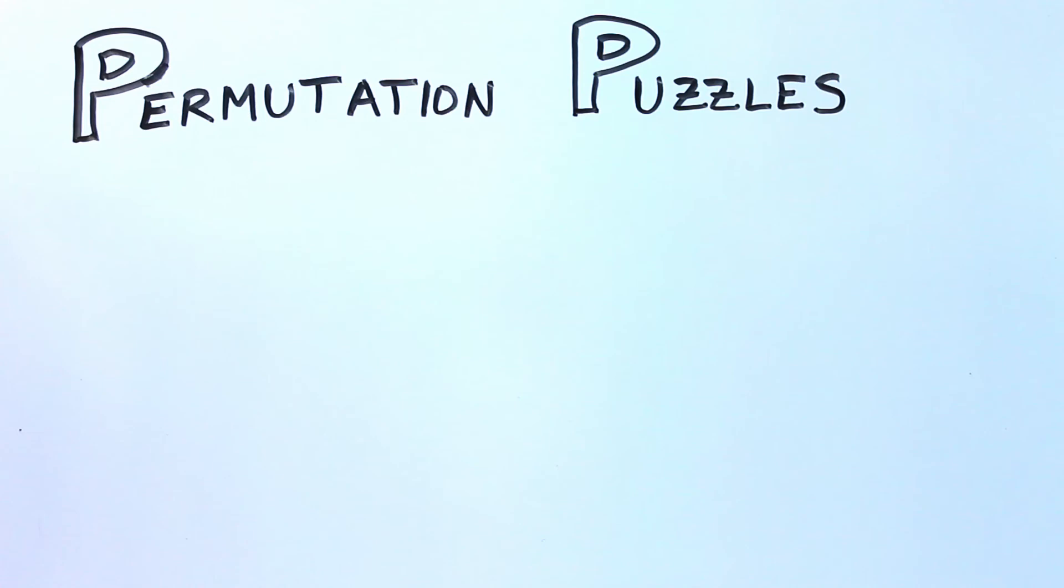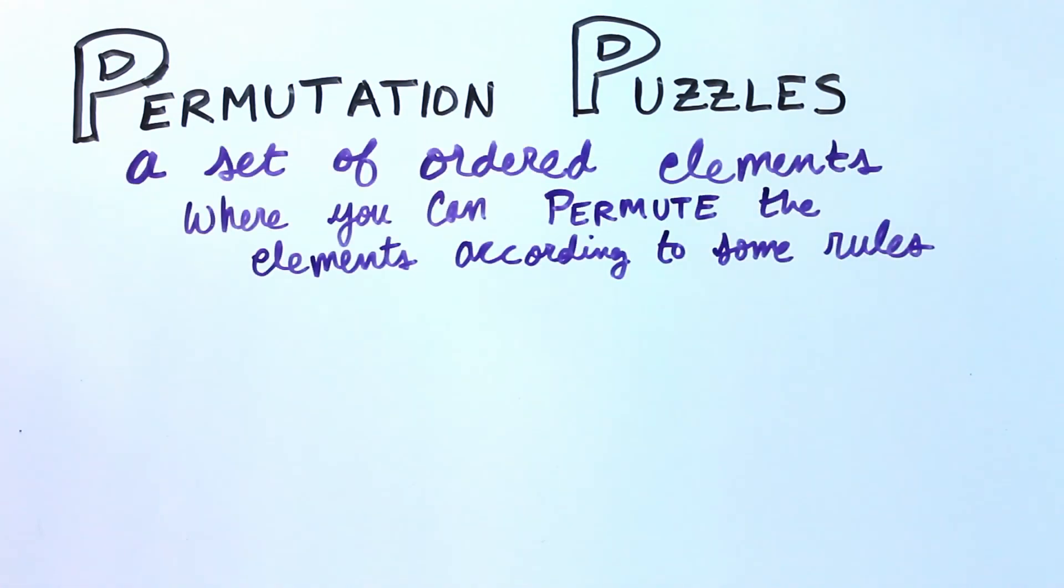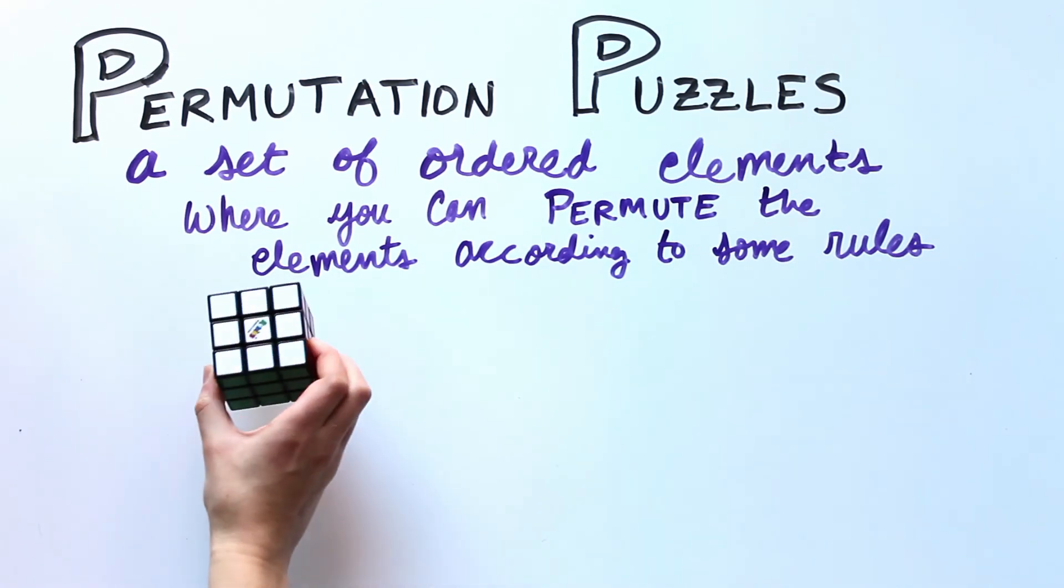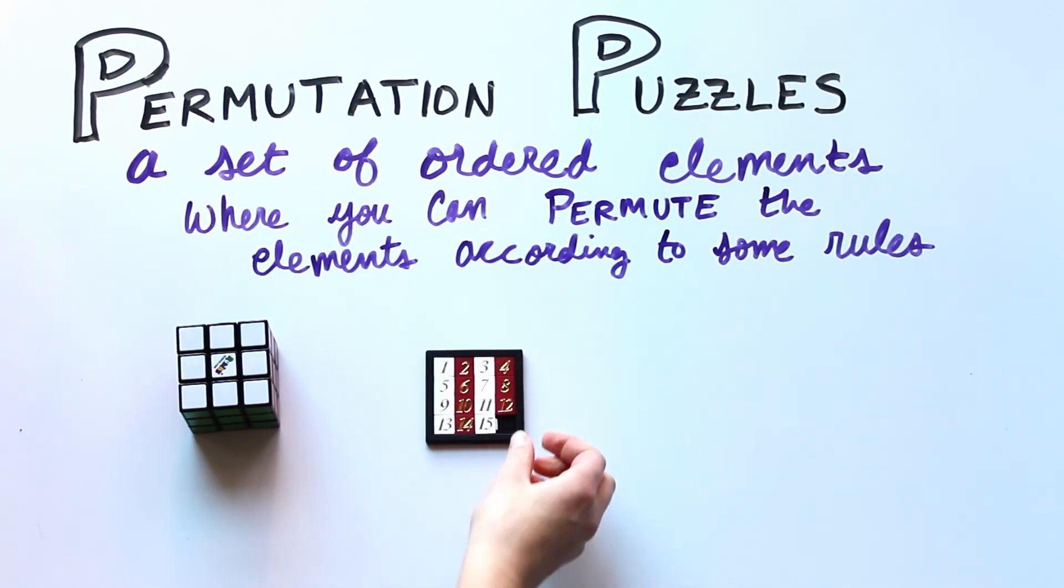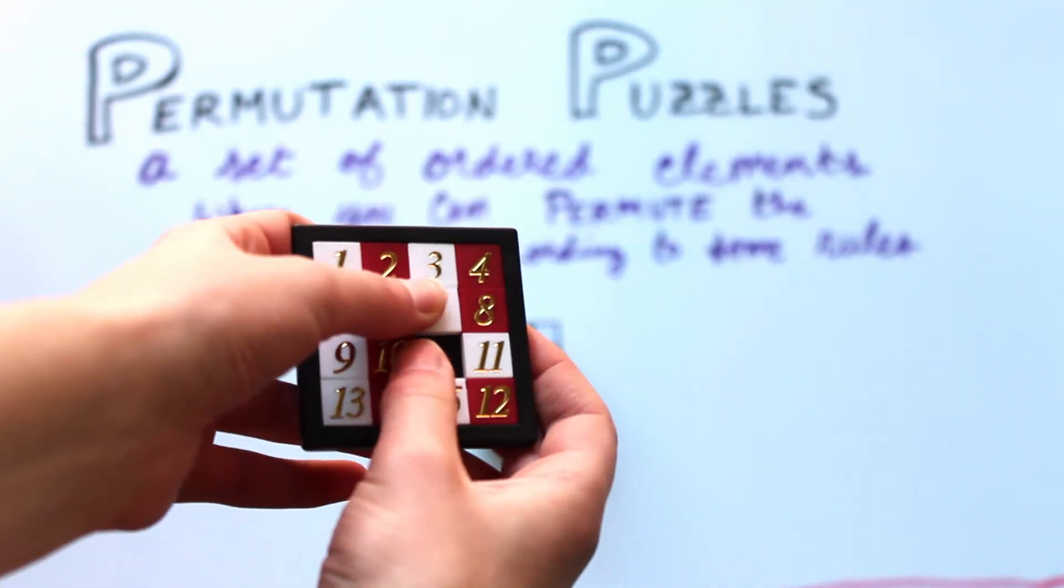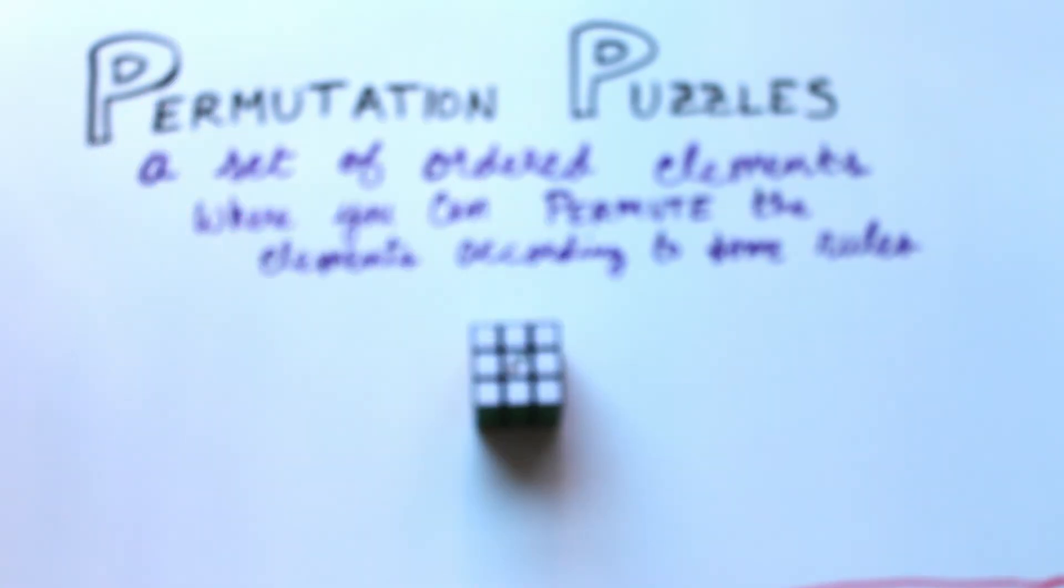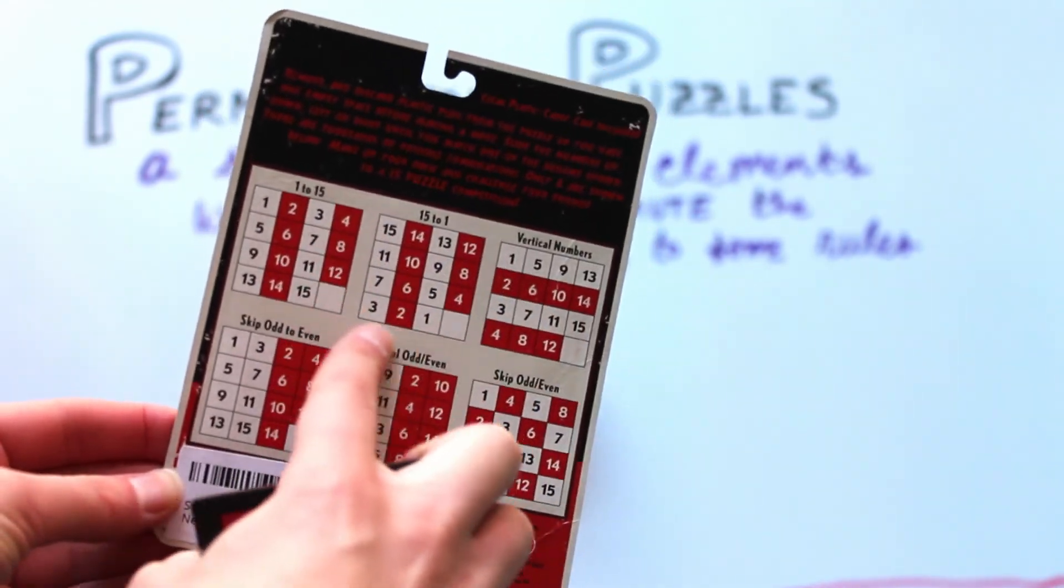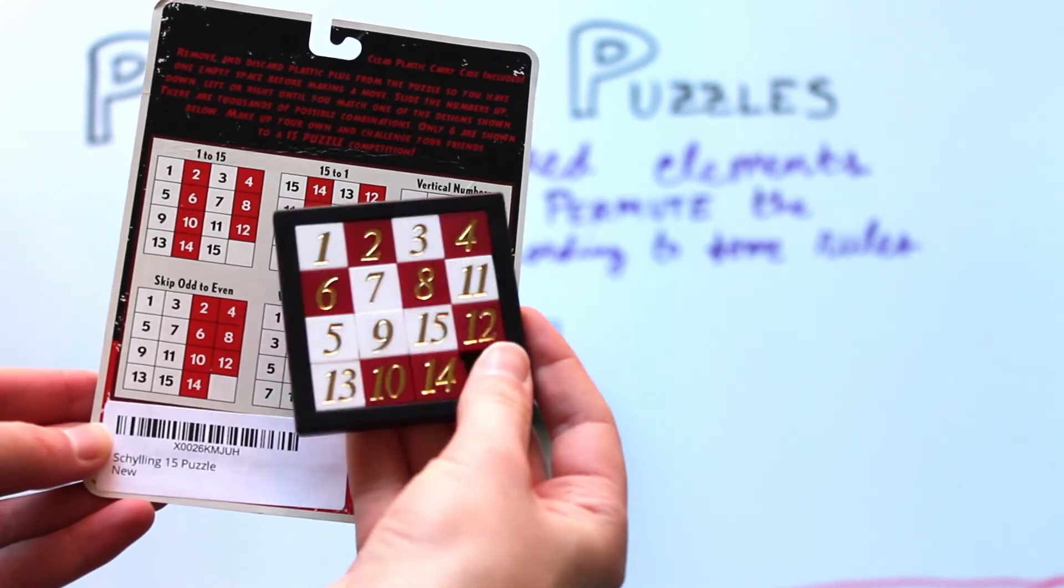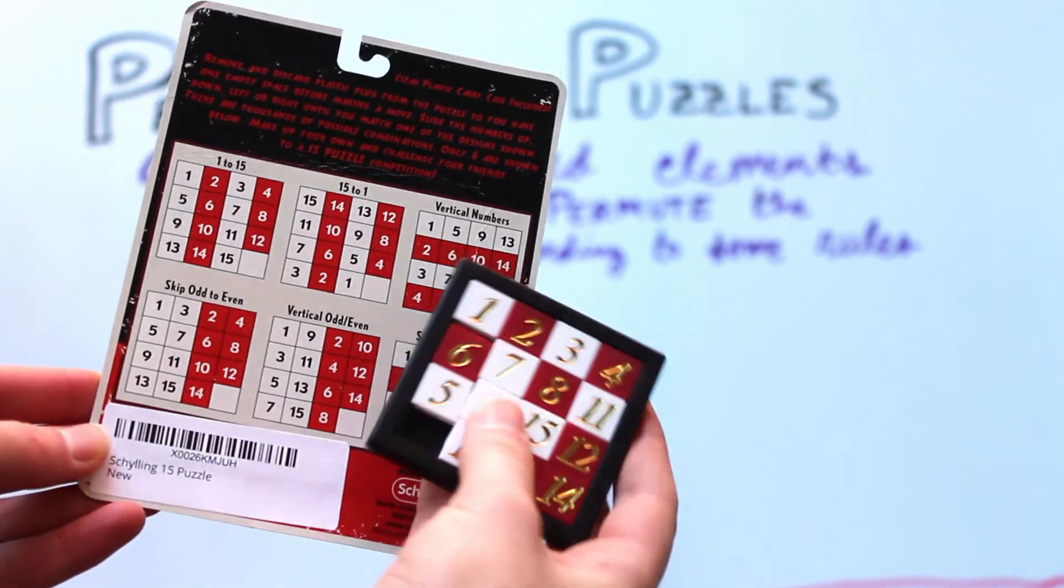This brings us to permutation puzzles. A permutation puzzle is a set of ordered elements where you can permute the elements according to the rules given by the puzzle. There are some extra conditions too, but we won't worry about those right now. The Rubik's Cube is a permutation puzzle, but there are some others you may not be familiar with. For instance, the 15 puzzle or the Hungarian rings. Numberphile actually made a great video on the 15 puzzle a couple years back. They explain why one of these patterns on the back of the package is actually impossible to achieve with legal moves. It has to do exactly with the even and odd permutations that we were just talking about. I'll put the link to the video down below.